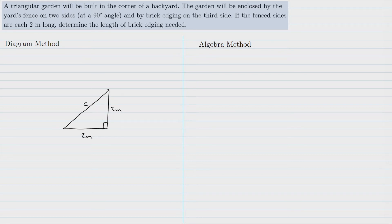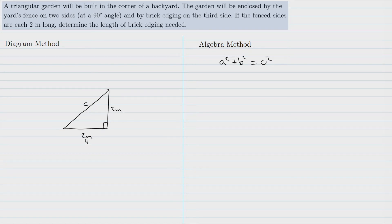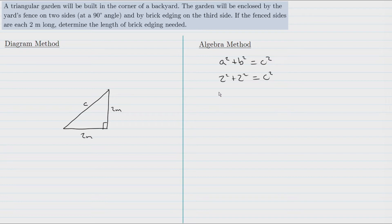We can use the Pythagorean theorem to find C, the hypotenuse. Using the algebraic method, our Pythagorean theorem states a squared plus b squared equals c squared. We know the hypotenuse is C, and A and B are both 2, so we can write 2 squared plus 2 squared equals C squared. Then we solve: 2 squared is 4, and 4 plus 4 is 8, so C squared equals 8.